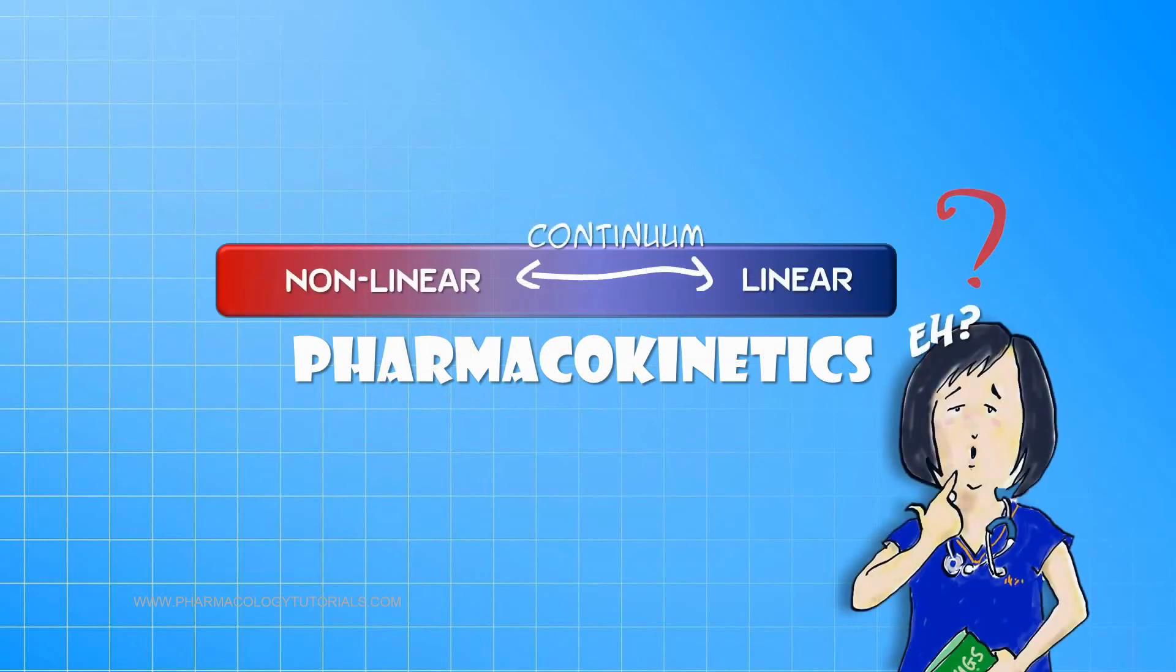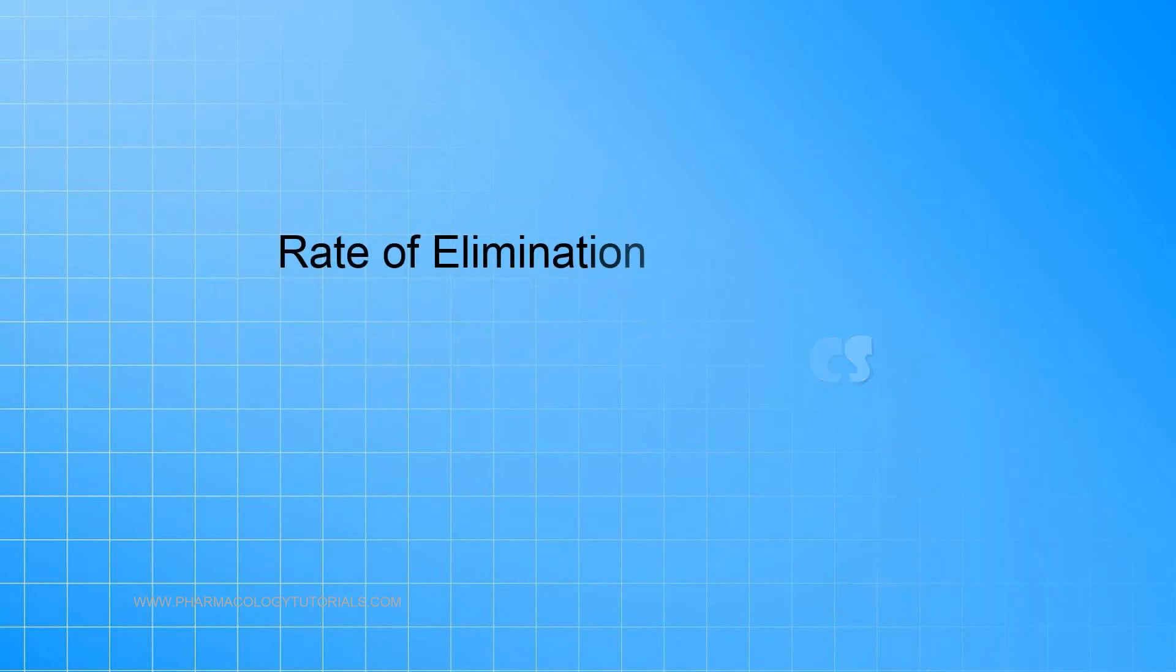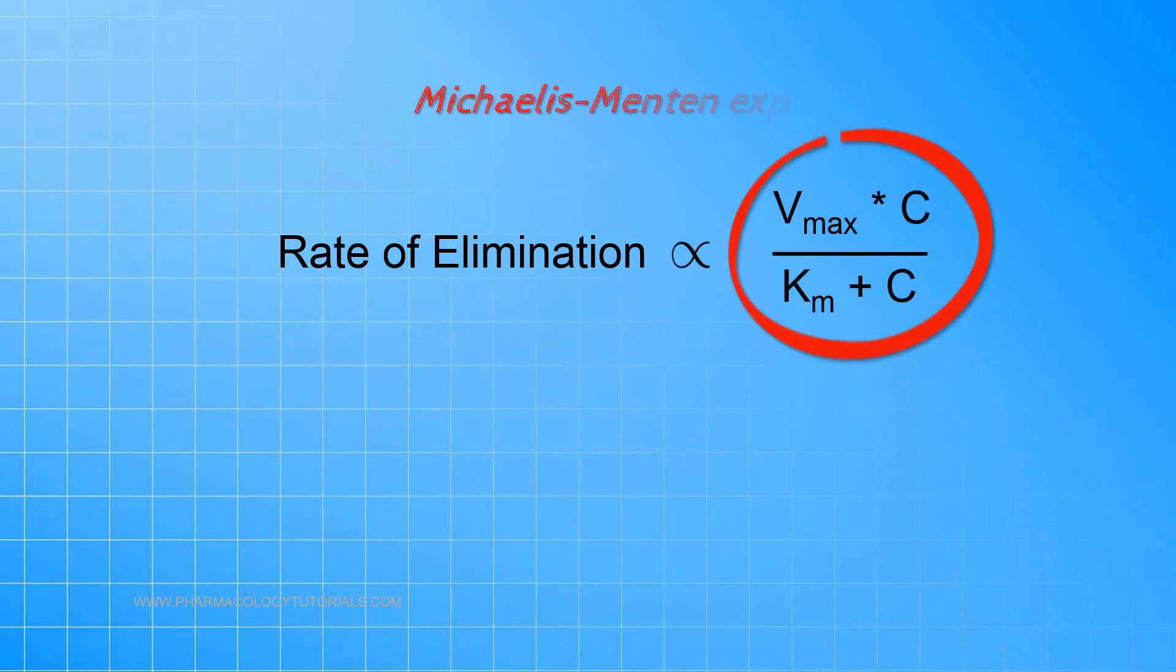You see, the elimination rate of any drug is actually described by a function that is similar to the Michaelis-Menten expression for enzyme kinetics. That is, Vmax times concentration divided by Km plus concentration. Using this expression, the full elimination profile looks something like this.